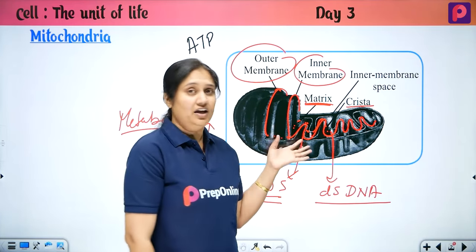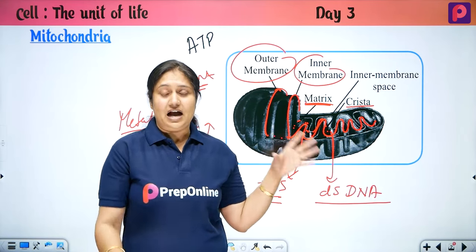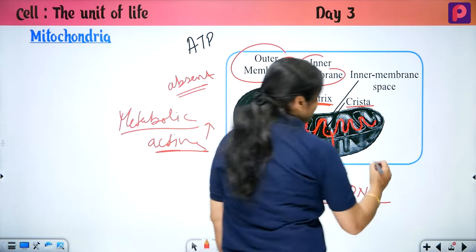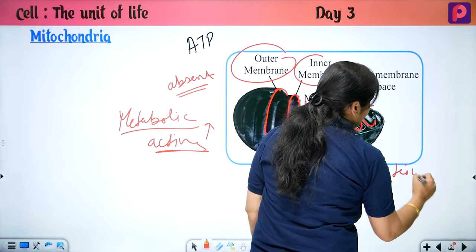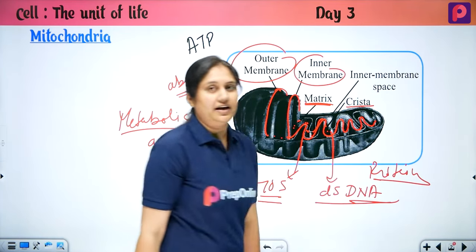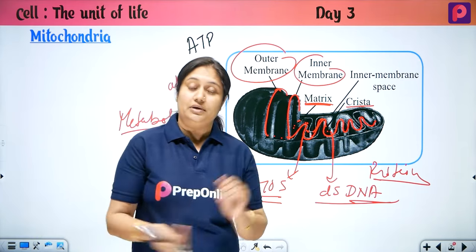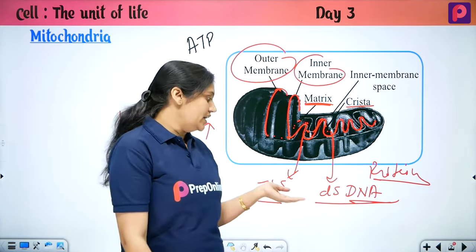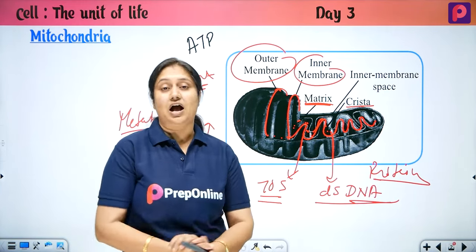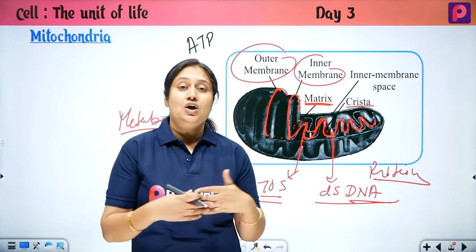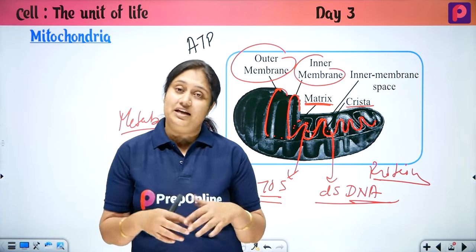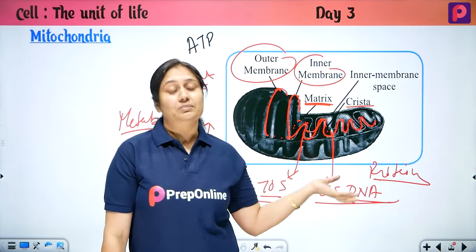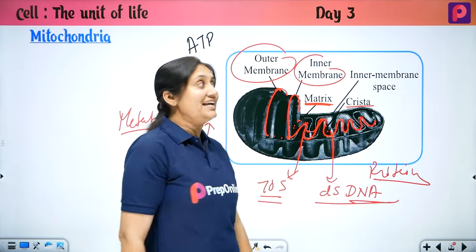It is an autonomous organelle — it can be self-controlled and can also create proteins. To create a protein, you need DNA. The DNA makes mRNA through transcription, and when the mRNA goes to the ribosome, translation occurs and a specific type of protein is made. So mitochondria can create proteins itself.